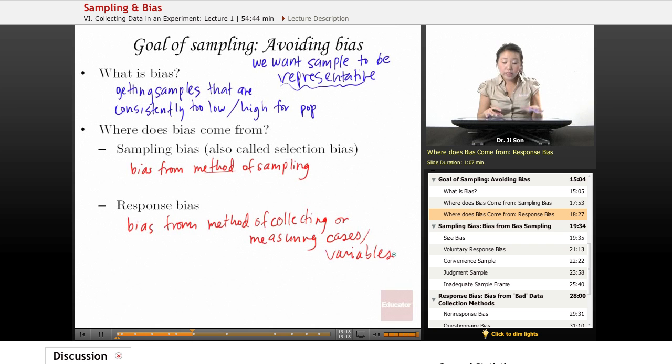So those kind of biases are also dangerous, because even when you have an unbiased sample, you might still have bias that comes from response bias. So we'll first talk about sampling bias, and then we'll talk about response bias.